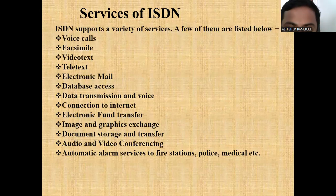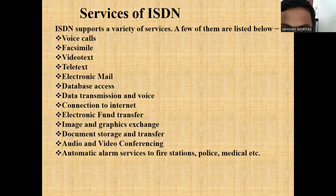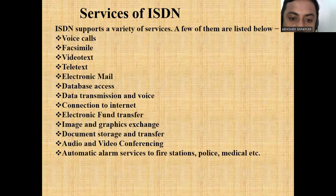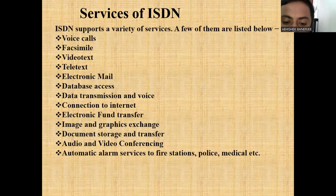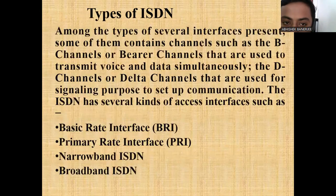Now, what are the services of ISDN? ISDN supports a variety of services. A few of them are: voice call, fax, video text, teletext, electronic mail, database access, data transmission, voice connection to internet, electronic phone transfer, image and graphics exchange, document storage and transfer, audio and video conferencing, and automatic alarm services to fire station, police, and medical. Basically, there are four types of ISDN: narrowband, broadband, Basic Rate Interface, and Primary Rate Interface.